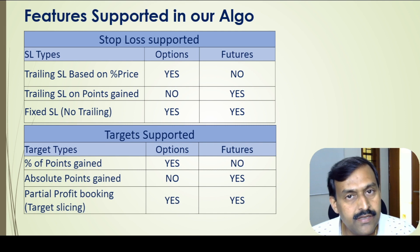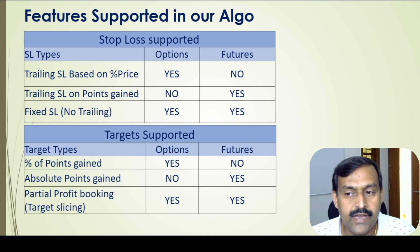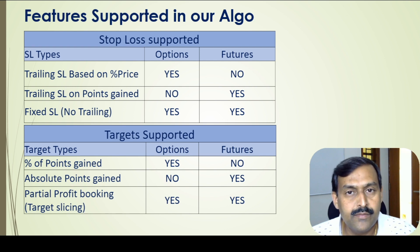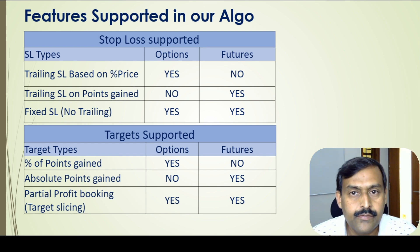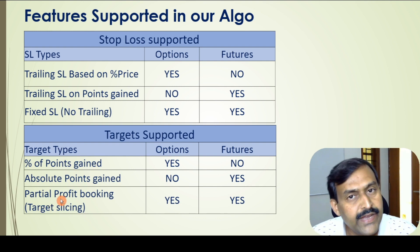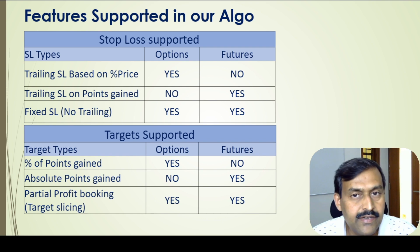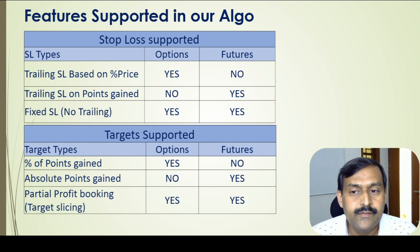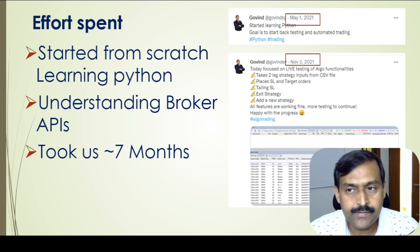For futures, the stop loss is set in points as mentioned in the strategy. Trailing stop loss is supported — we decide whether to use trailing or not before starting the strategy. For the target, we set a percentage of points gained as target for options, with the percentage taken from the strategy input. For futures, absolute points mentioned in the strategy are used to set the target. Another very important feature is partial profit booking — we can mention the amount of partial profit we want to book in the strategy itself. There are three categories: we can decide to book 25% or 50% profit in different parts. This is very important as far as risk management is concerned.